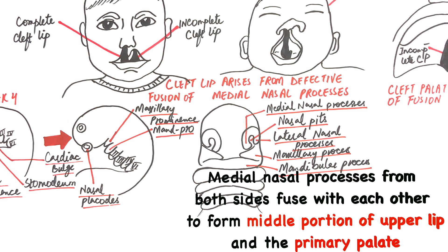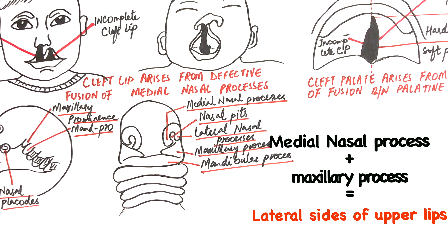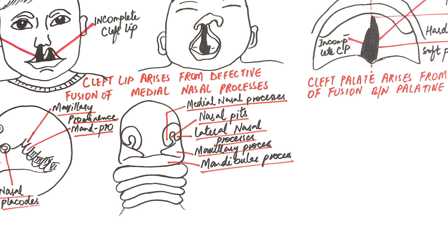At around week seven to eight, the medial nasal processes of both sides will fuse to form the middle portion of the upper lip along with the primary palate. The medial nasal processes will also fuse with the maxillary process to form the lateral sides of the lips. If the cleft lip is of median type — located at the middle portion of the lip only — the reason for the cleft is defective fusion between the two medial nasal processes.